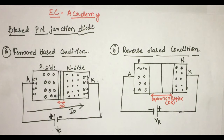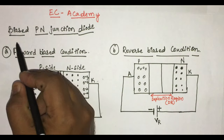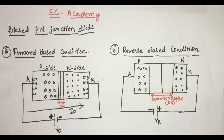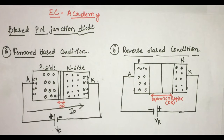Hello friends, welcome to EC Academy. In the previous lecture we discussed about unbiased p-n junction diode. Today we will discuss about biased p-n junction diode. In the previous lecture we also understood the definition of biasing: if we apply an external voltage source to a diode, the process is known as biasing.